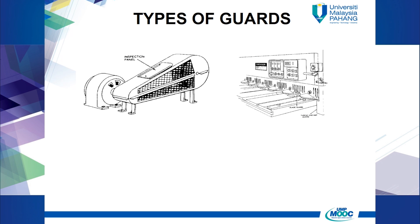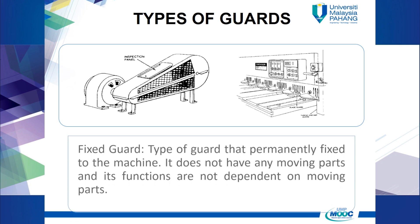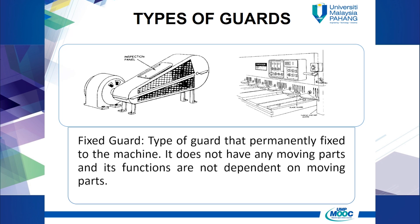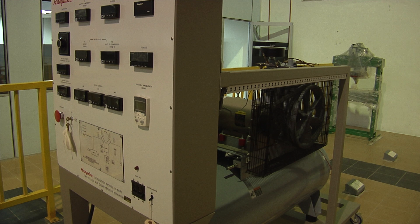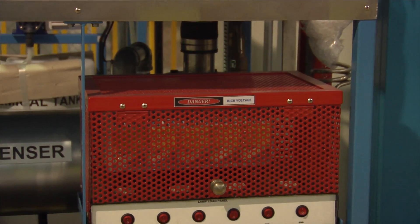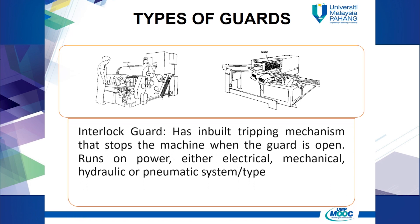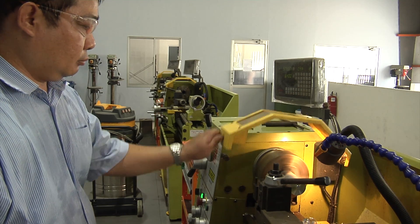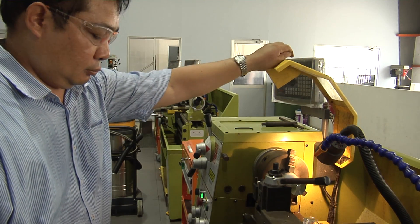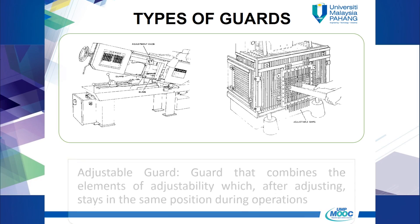There are several types of guards used for machinery protection. Number one: fixed guard — a type of guard that is permanently fixed to the machine. It does not have any moving parts, and its functions are not dependent on moving parts. Number two: interlock guard — an interlock guard has an inbuilt tripping mechanism that stops the machine when the guard is open.